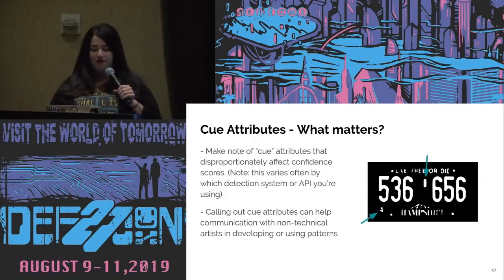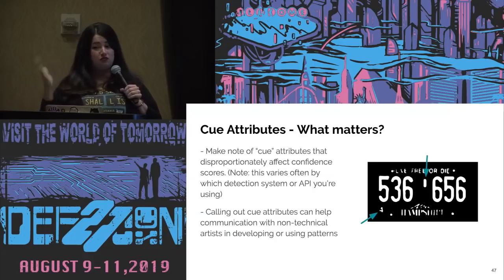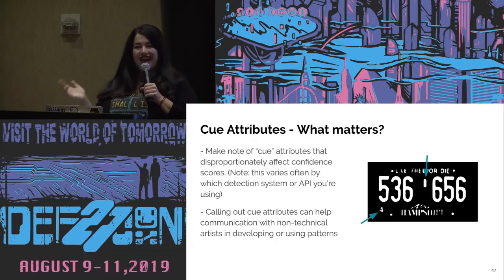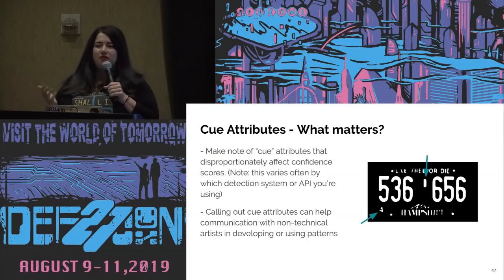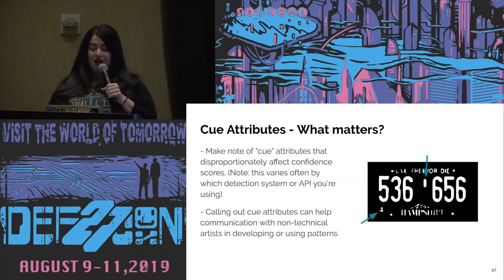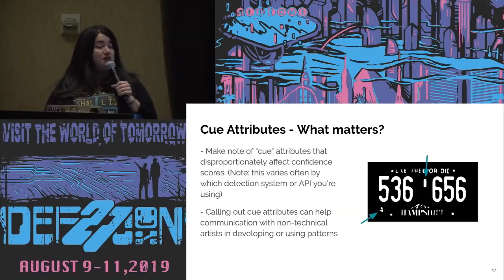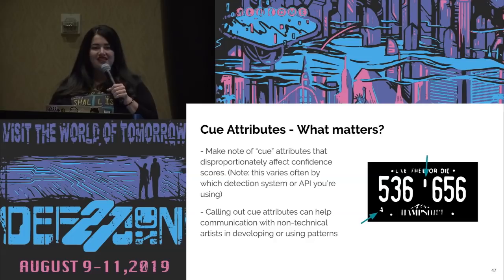After holding up your cards to the API with all these different modifications, you get a really awesome set of answers. I call these 'cue attributes' — you start to get a gut sense of what matters to this recognition system versus what does not, and what features have disproportionate impact on whether it's confident. We want to communicate to people in other disciplines — like across tech and art — what matters and what doesn't.